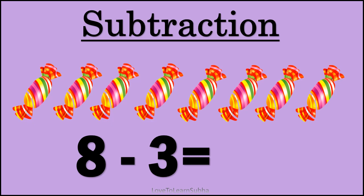In this problem we have to do eight minus three, that is we have to subtract number three from eight. For this, let's start counting the number of chocolates: one, two, three, four, five, six, seven, eight. So there are totally eight chocolates.